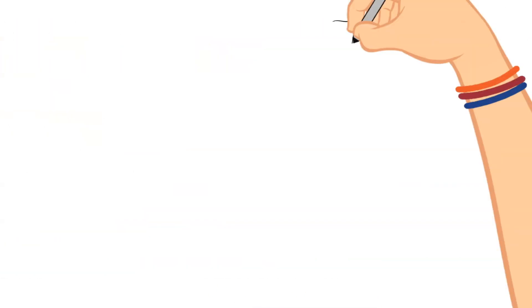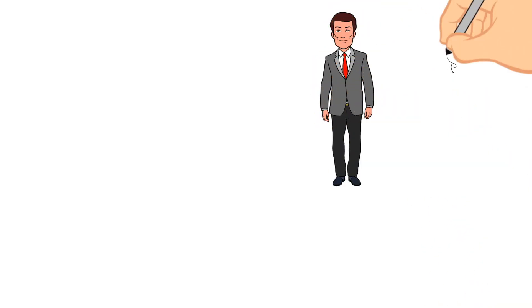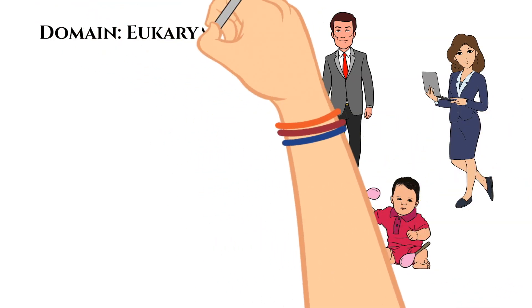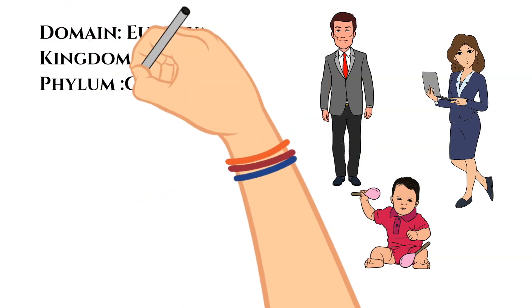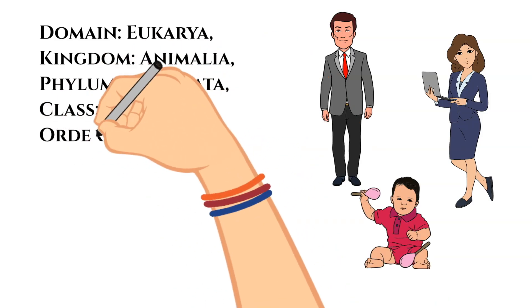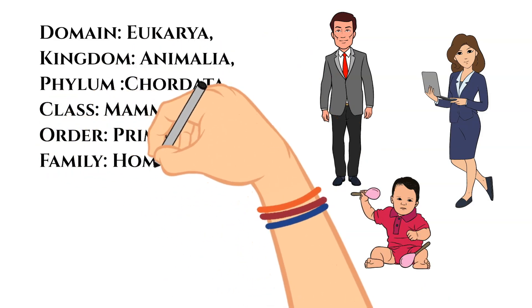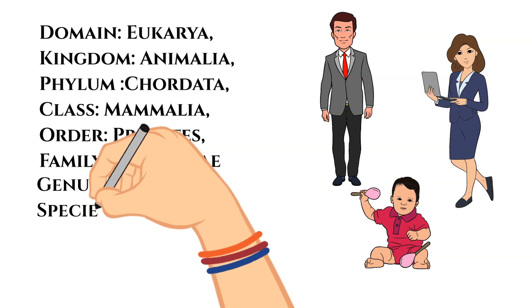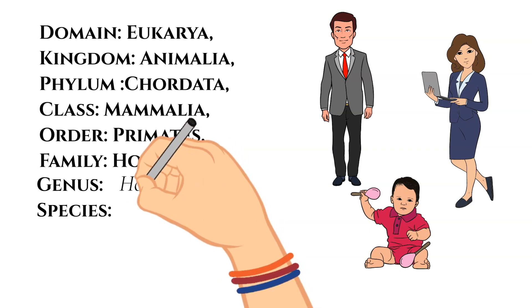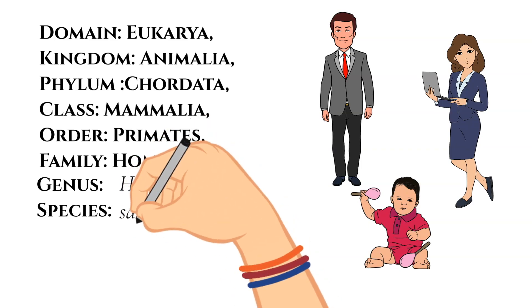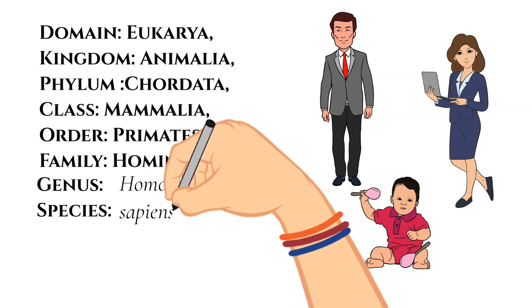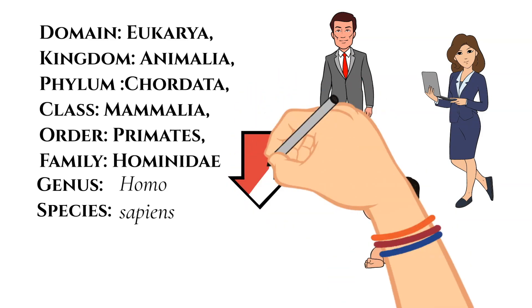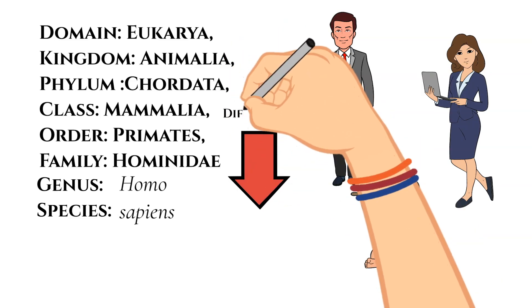People are classified in domain Eukarya, kingdom Animalia, phylum Chordata, class Mammalia — all the same as a dog up until this point. Then we switch: order Primates, family Hominidae, genus Homo, species sapiens. Dogs and humans are both mammals with a backbone, since they share the Chordata phylum. But at the order classification, the differences begin to arise.